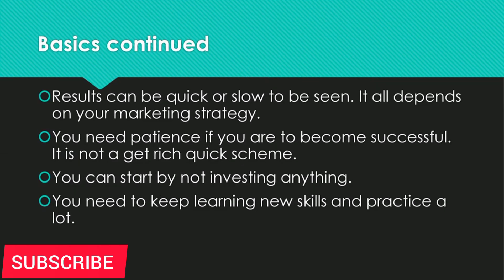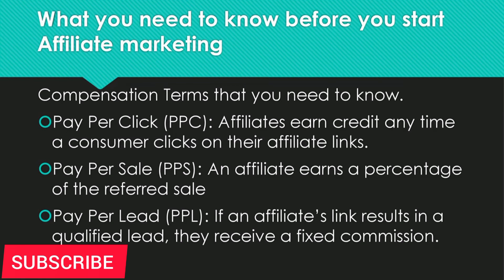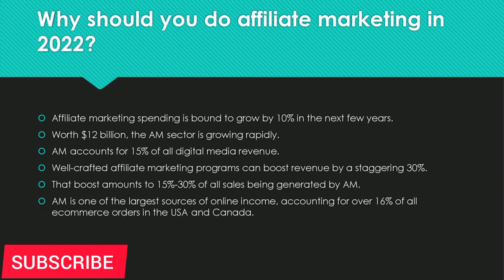Also, what you should know: results may be quick or slow depending on your efforts. You should also know specific terms like pay-per-click, pay-per-sale, and pay-per-lead — I give you an overview of those terms. Results are dependent on how you yourself are promoting the product. Another important thing to know is that the affiliate marketing industry is growing and is not stopping — many people are earning millions of dollars every year through it.